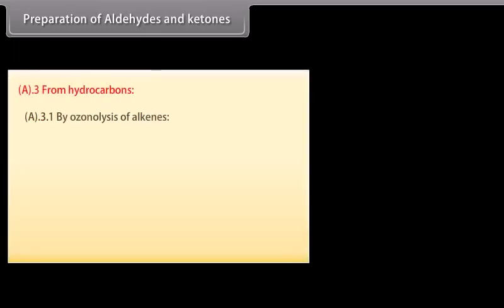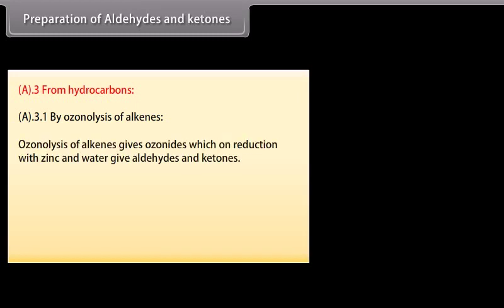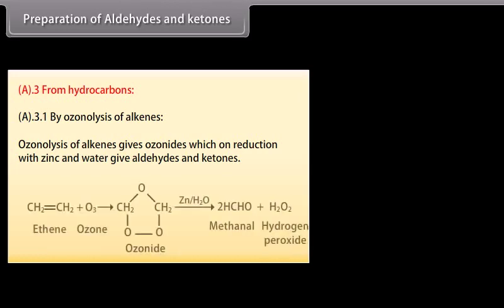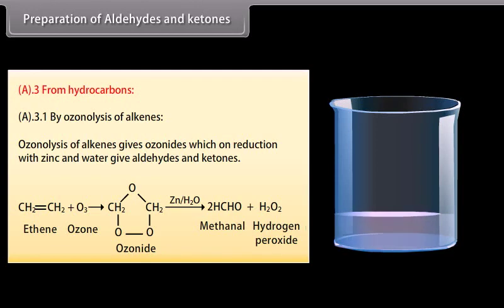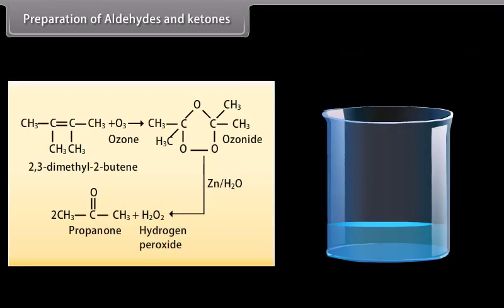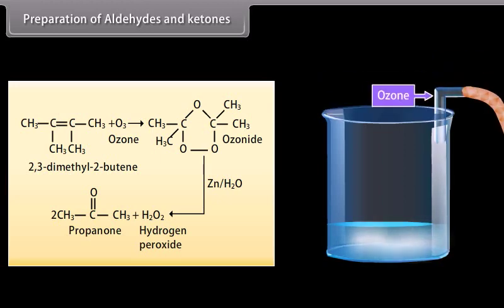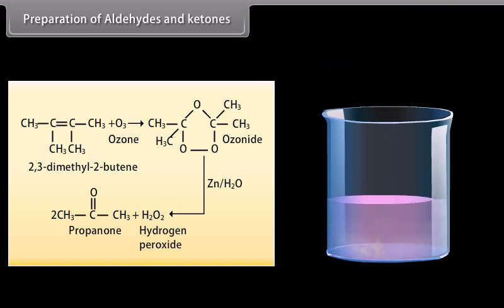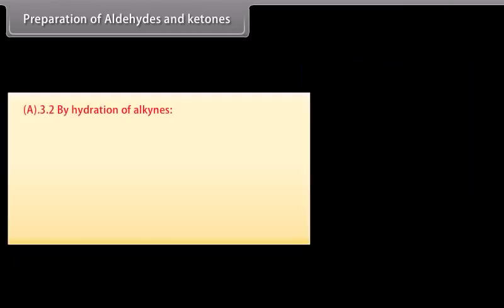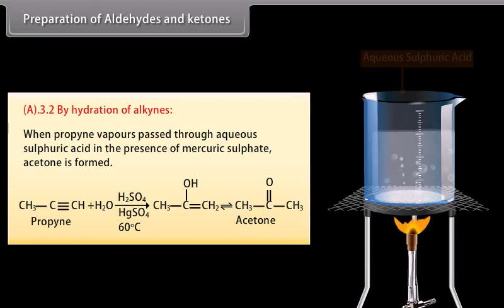From hydrocarbons — By ozonolysis of alkenes. Ozonolysis of alkenes gives ozonides, which on reduction with zinc and water give aldehydes and ketones. Ozone gas reacts with ethene and forms an intermediate ozonide; on treatment with zinc and water, methanal and hydrogen peroxide are formed. Ozone gas reacts with 2,3-dimethyl-2-butene to form an ozonide, which with zinc and water gives propanone and hydrogen peroxide. By hydration of alkynes: when acetylene vapors are passed through aqueous sulfuric acid in the presence of mercuric sulfate, acetaldehyde is formed.